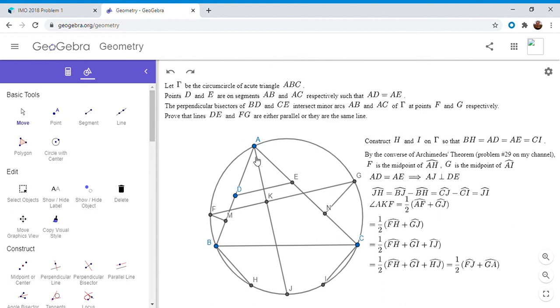Arc FH plus arc HJ is arc FJ, and arc GI is equal to arc GA by the converse of Archimedes theorem. This is really interesting because now we have half of arc FJ plus arc GA, and by the theorem I mentioned before, that's the angle between chords AJ and FG. So that's angle AKG is half the sum of those two intercepted arcs. We're using that theorem both forwards and backwards. After all this work with the arcs and utilizing symmetry, we have that angle AKF is equal to angle AKG.